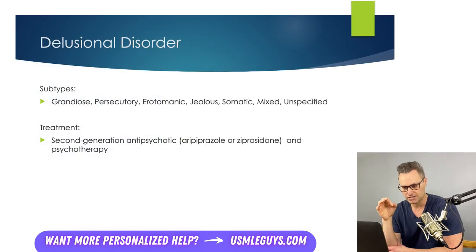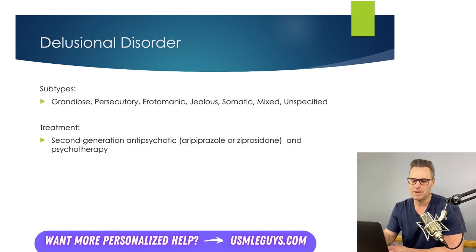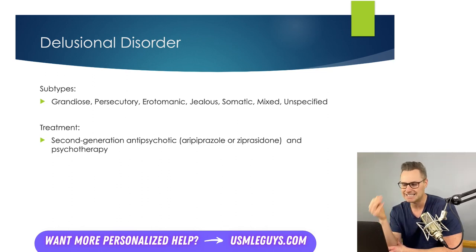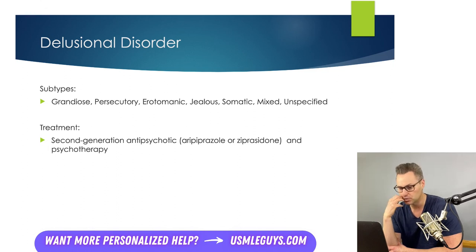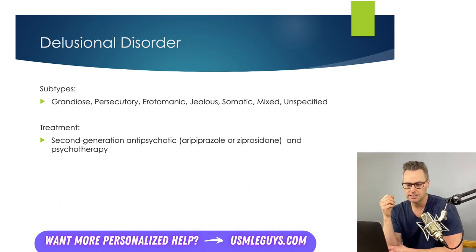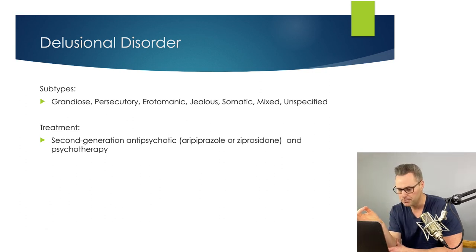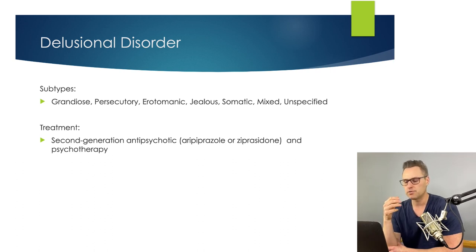The subtypes of delusions in delusional disorder include: grandiose type, where the patient believes they are especially powerful or talented; persecutory type, where patients believe others are conspiring against them; erotomanic type, where the patient believes another person — often a celebrity — is secretly in love with them, which can lead to stalking and assaultive behavior; jealous type, involving belief that a partner is unfaithful; somatic type, where the patient thinks their body is diseased or infected with parasites; and mixed or unspecified types. Treatment is a second generation antipsychotic such as aripiprazole or ziprasidone, along with psychotherapy.